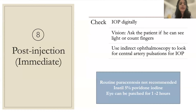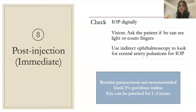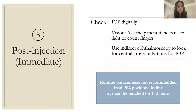Tip eight — post-injection: check intraocular pressure digitally. Routine paracentesis is not recommended in all cases, but perform it if the pressure feels high. Ask the patient if they can see light or count fingers to grossly assess vision. Use indirect ophthalmoscopy to look for central artery pulsations. Instill 5% povidone-iodine when closing the eye and patch for one to two hours.